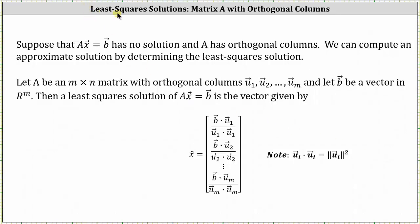Welcome to a lesson on how to determine the least squares solutions, which are approximate solutions to the equation matrix A times vector x equals vector B that has no solution, where matrix A has orthogonal columns. Let A be an m by n matrix with orthogonal columns equal to vectors u₁, u₂, and so on, and let vector B be a vector in ℝᵐ. Then a least squares solution is given by the formula shown below, denoted as vector x̂.